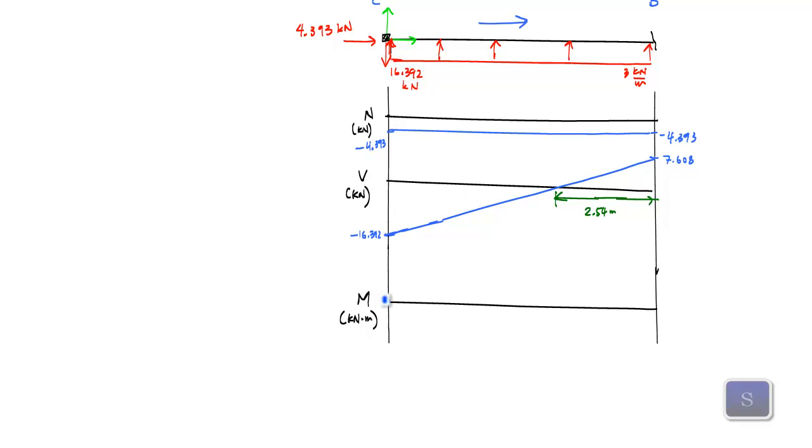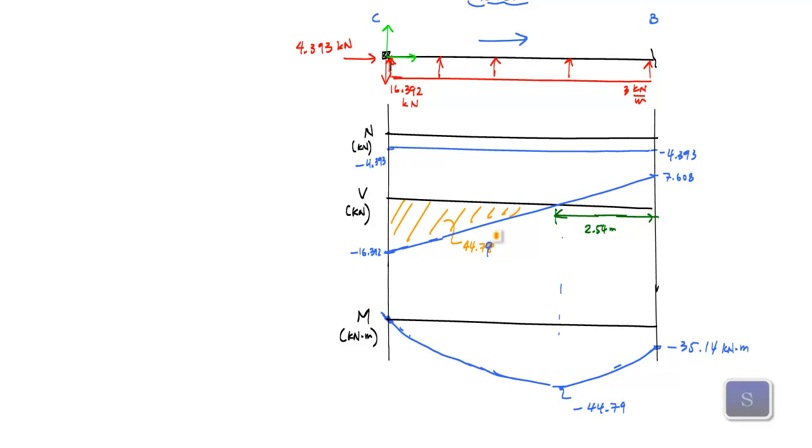I would have had a decreasing slope. This area you would have calculated to be, this would have been that 44.78. Based on the orientation of my drawing, I would have, boom, right here. This would have been horizontal. This value would have been negative 44.78 or 9 and this would have been that negative 35.14 kilonewton meters. These would have been just as equally correct.